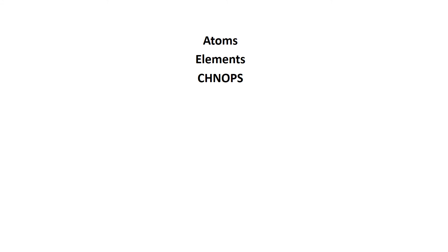In this lesson, we saw that all matter is composed of atoms. Atoms are the smallest units of matter, and the different types of atoms are called elements. We saw that the six most important elements in biology are the SHNOBS elements: carbon and hydrogen, nitrogen and oxygen, phosphorus and sulfur.